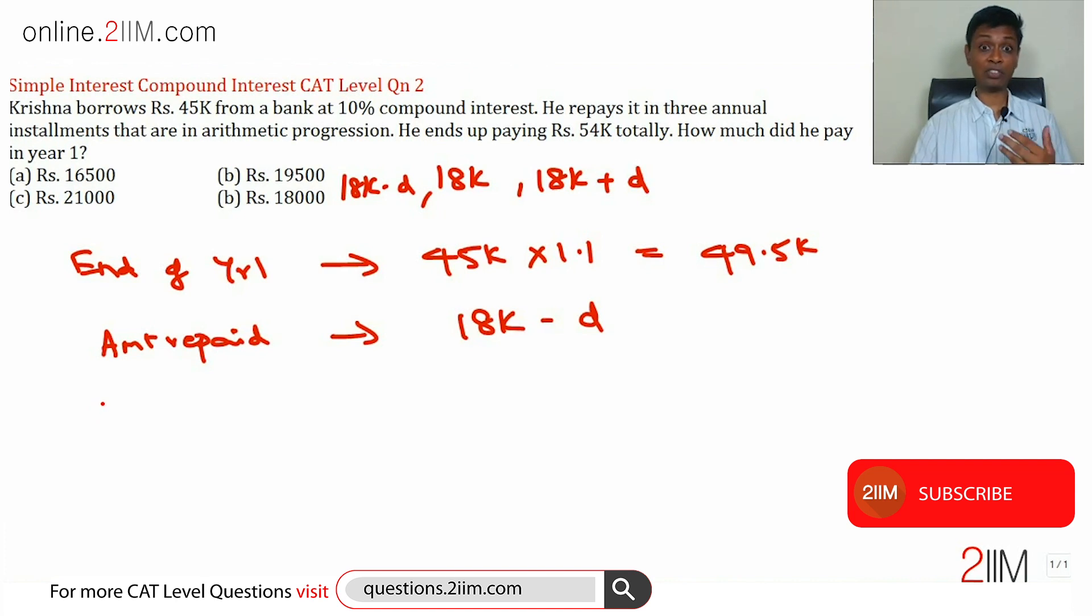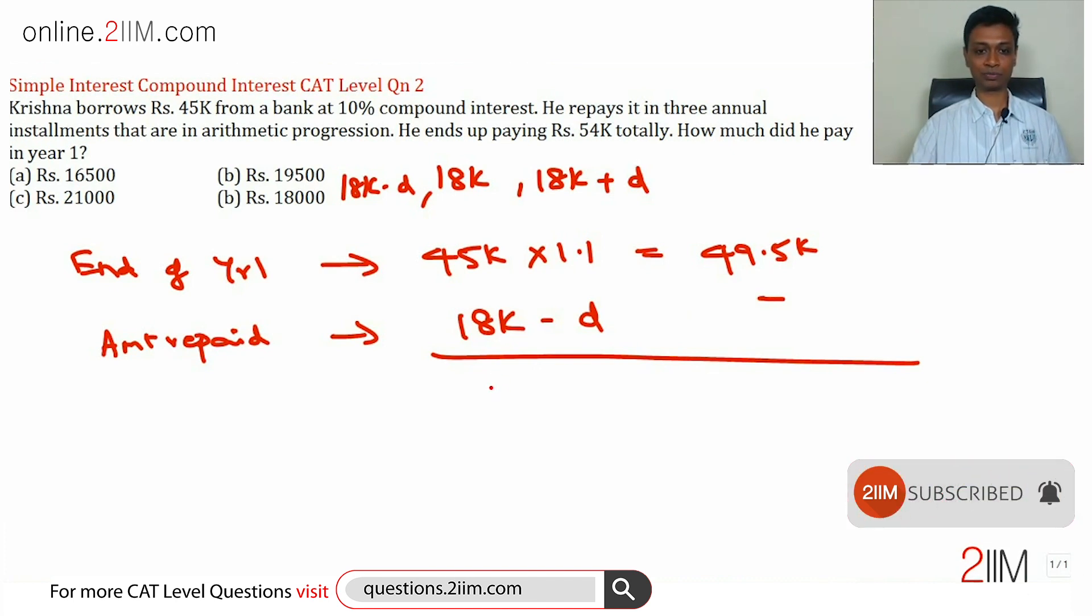Amount outstanding at the end of year one after having paid this would be this number minus that: 49.5 minus 18,000. So 49 minus 18 is 31—this is 31.5k plus D. That is the amount outstanding.